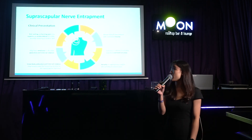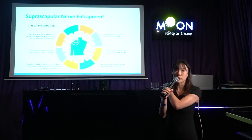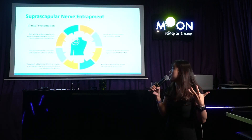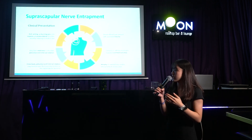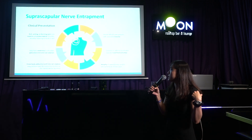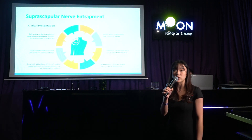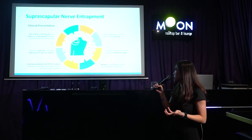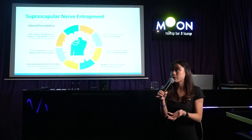Common clinical presentations include a dull aching pain over the posterior lateral shoulder that may radiate up to the neck or down the arm. Patients may have weakness in shoulder abduction and external rotation, and cross-body adduction and internal rotation can increase pain by tensioning the suprascapular ligaments. Almost 40% of cases are associated with trauma, and it's common in overhead athletes. In some cases, atrophy of the supraspinatus and infraspinatus may be noted.